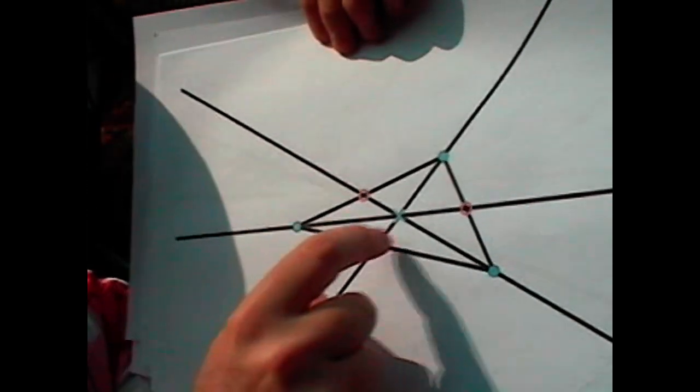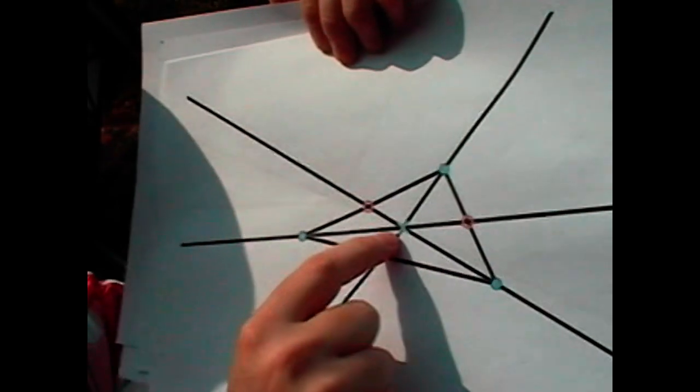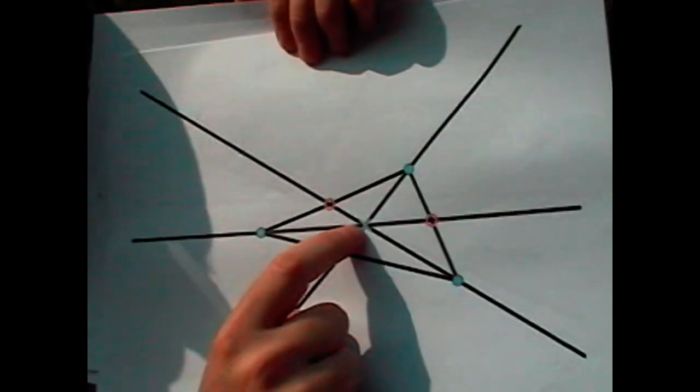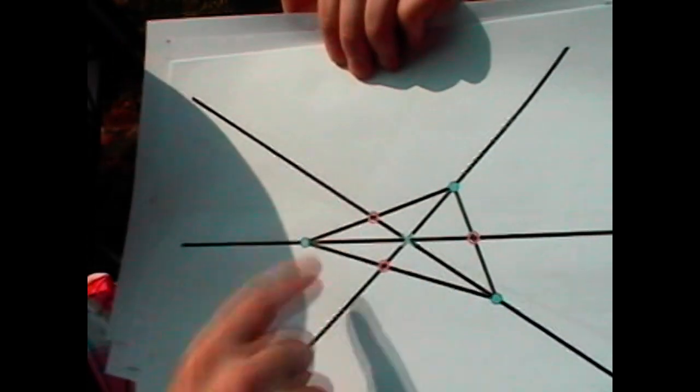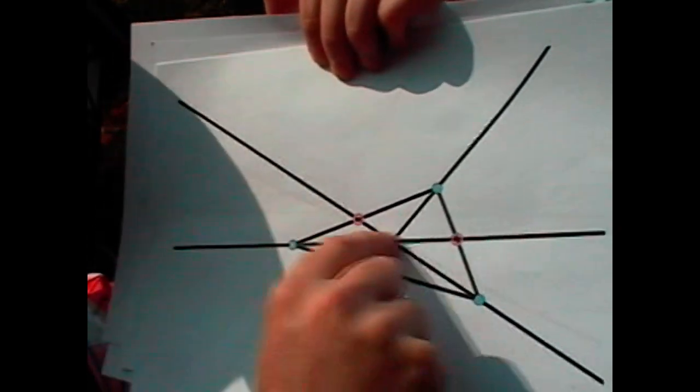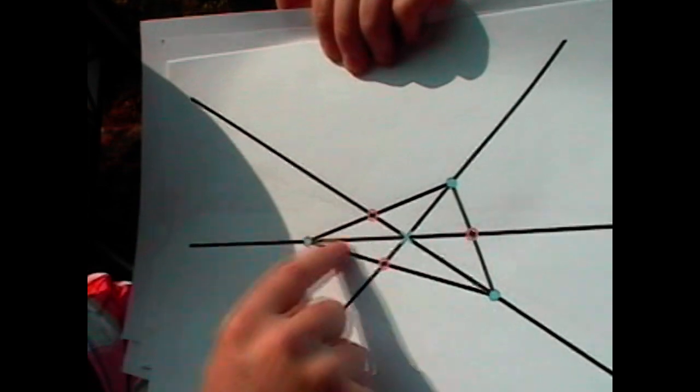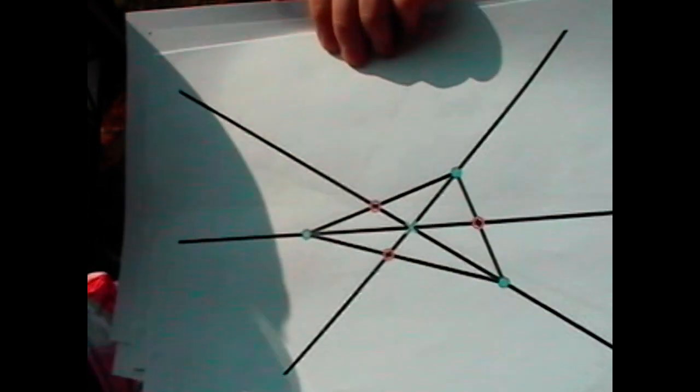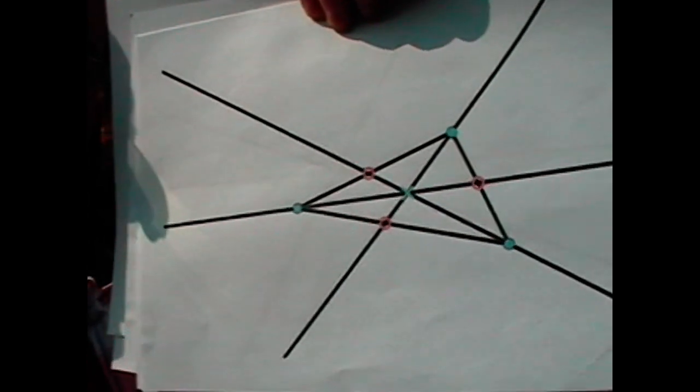All those red dots make 3, 3 more, and that makes 7 dots. And you have 1, 2, 3, 4, 5, and 6 lines, and 6 triplets of dots on those lines.